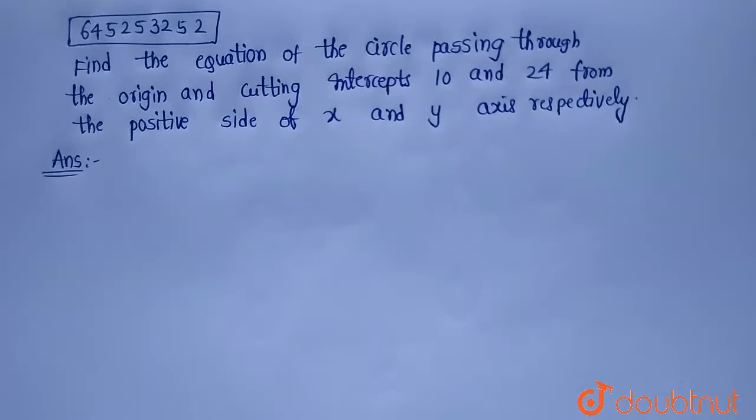Hello everyone, today's question is: find the equation of the circle passing through the origin and cutting intercepts 10 and 24 from the positive side of x and y axis respectively.